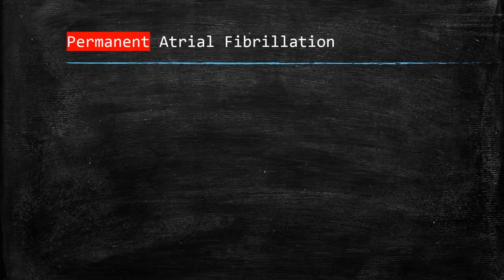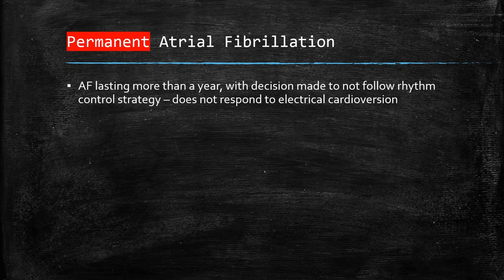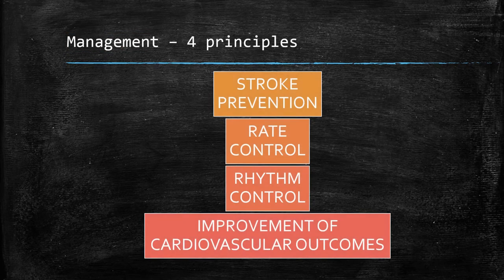Permanent AF, in comparison, is when the decision is made not to follow rhythm control for whatever reason, and instead long-term rate control is adopted. Moving on to the management of atrial fibrillation, there are four main principles: stroke prevention, rate control, rhythm control, and improvement of cardiovascular outcomes.